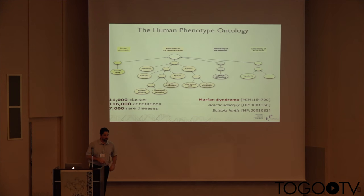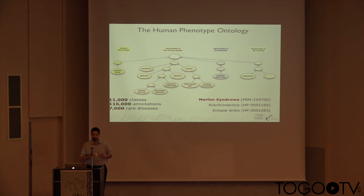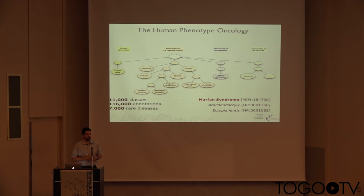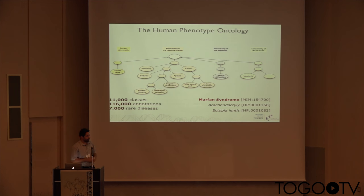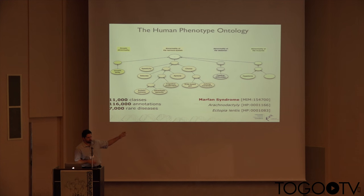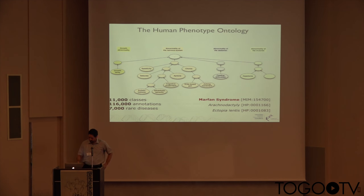One of the key aspects to this problem is the use of a standardized phenotype ontology. While a true standard doesn't exist, the de facto standard for representing phenotypes — especially in the rare disorder domain — is the Human Phenotype Ontology (HPO), which currently has around 11,000 classes and over 100,000 manually curated annotations. The annotations are of the form, for example, Marfan syndrome associated with arachnodactyly and ectopia lentis.